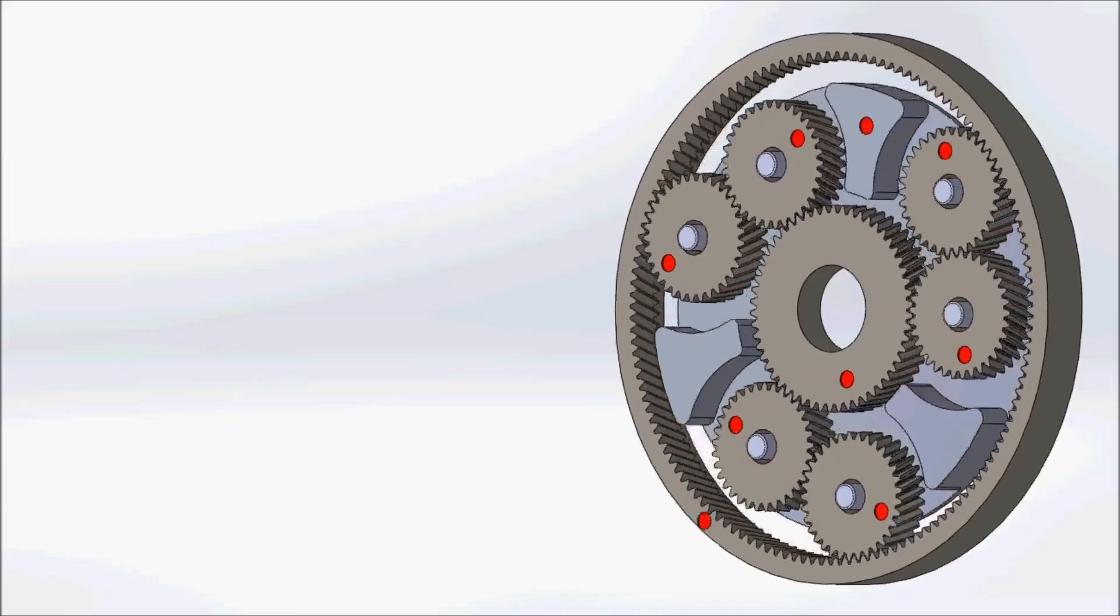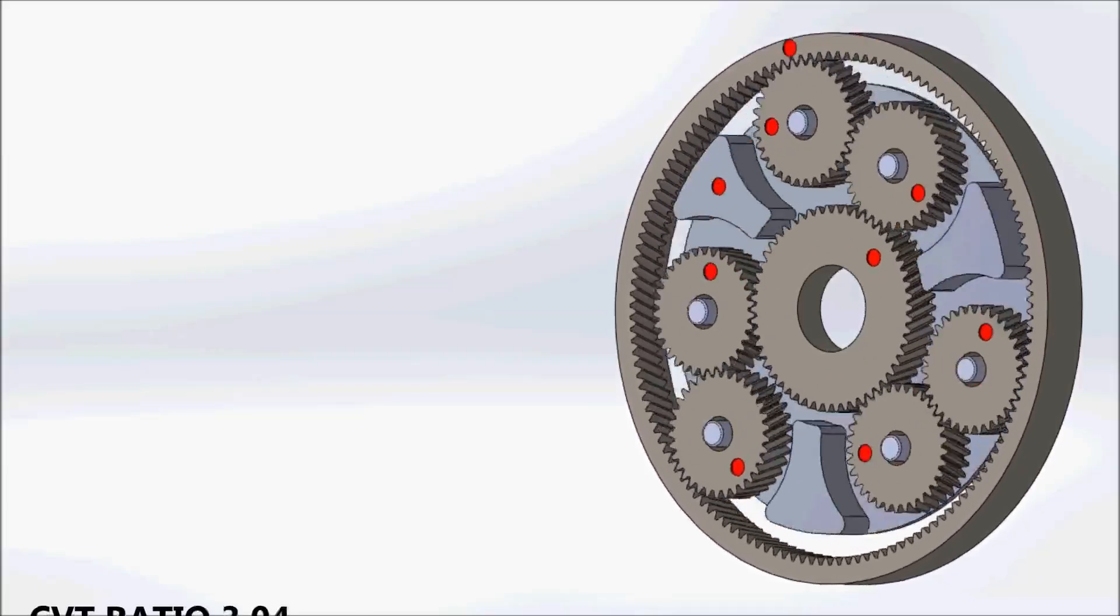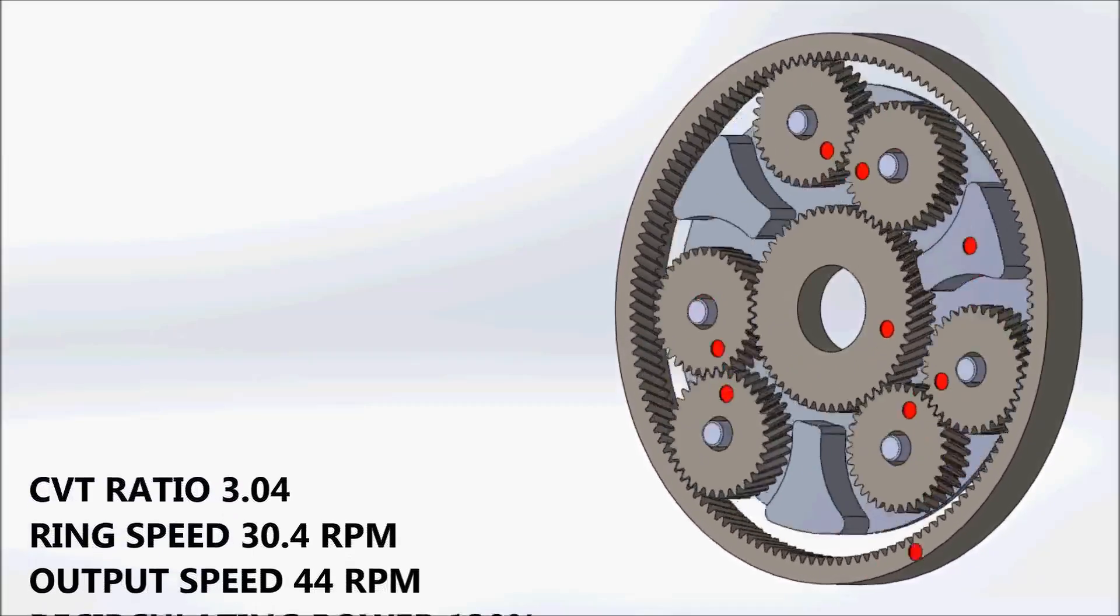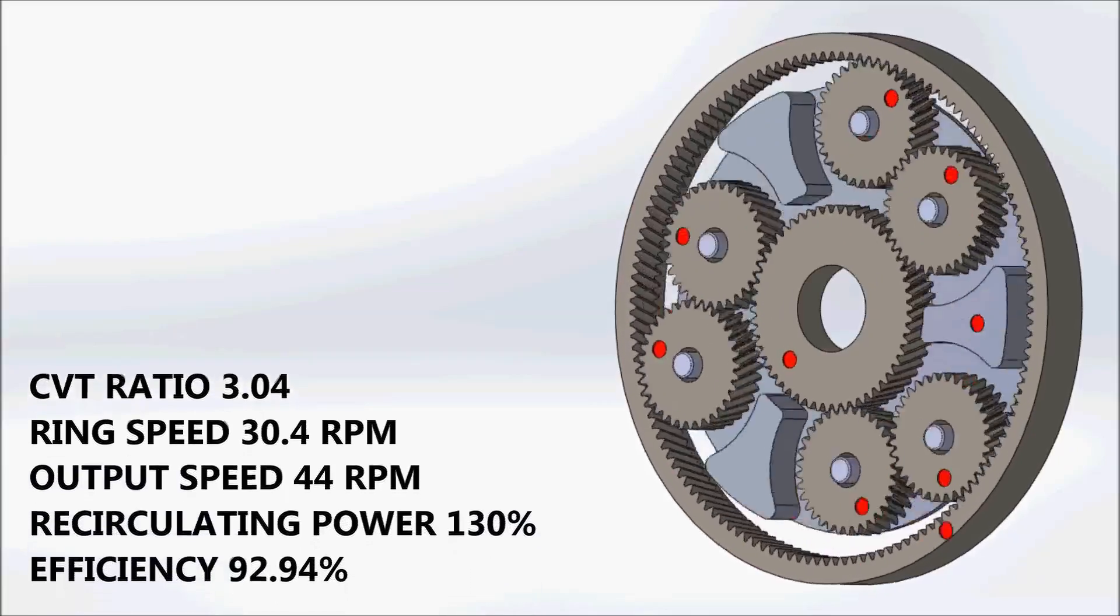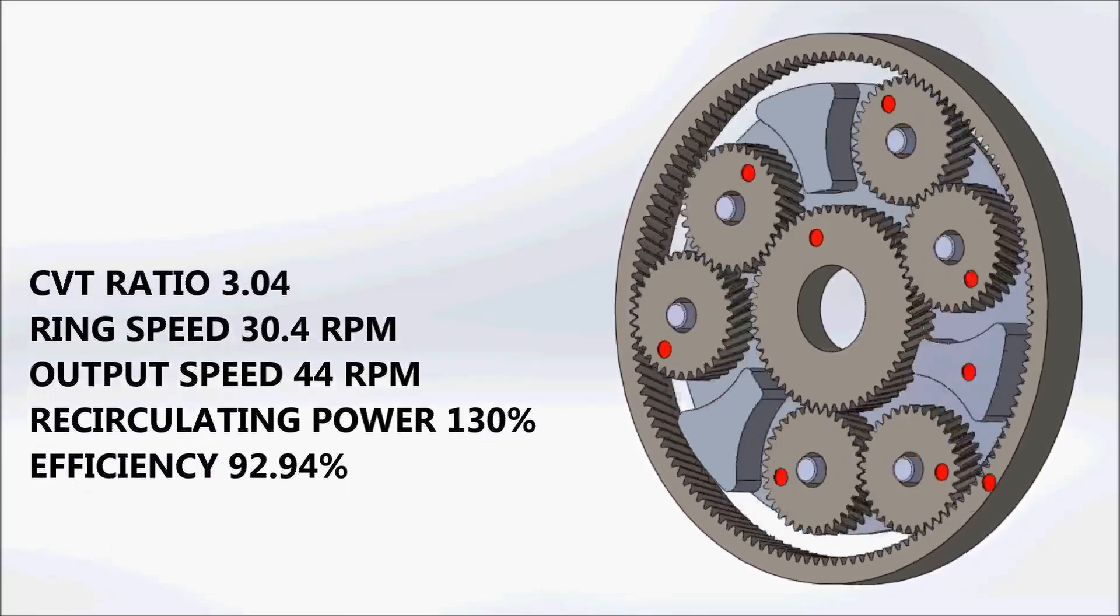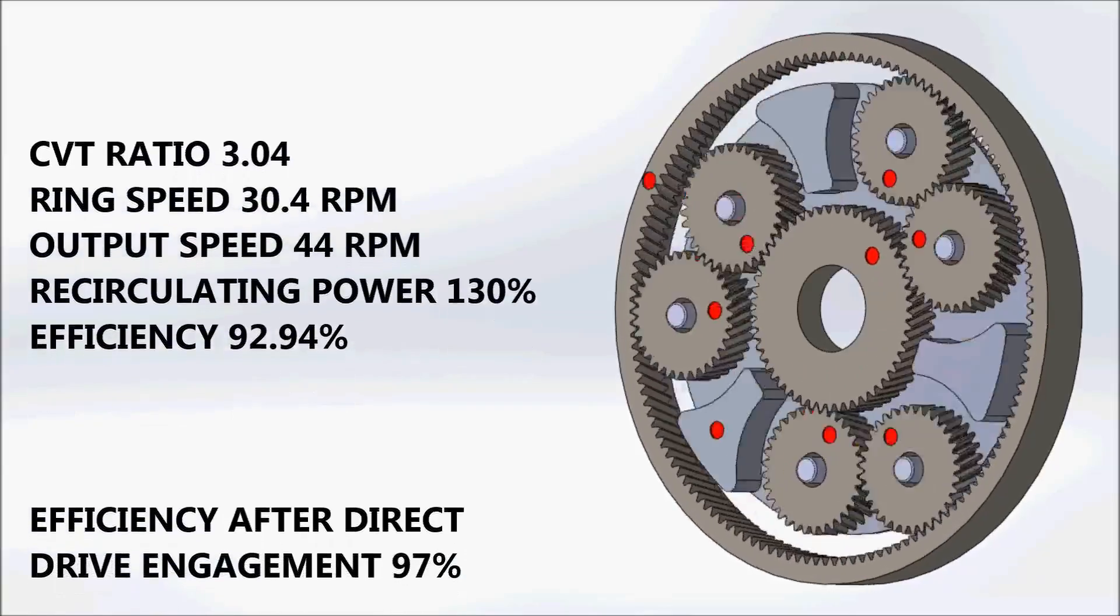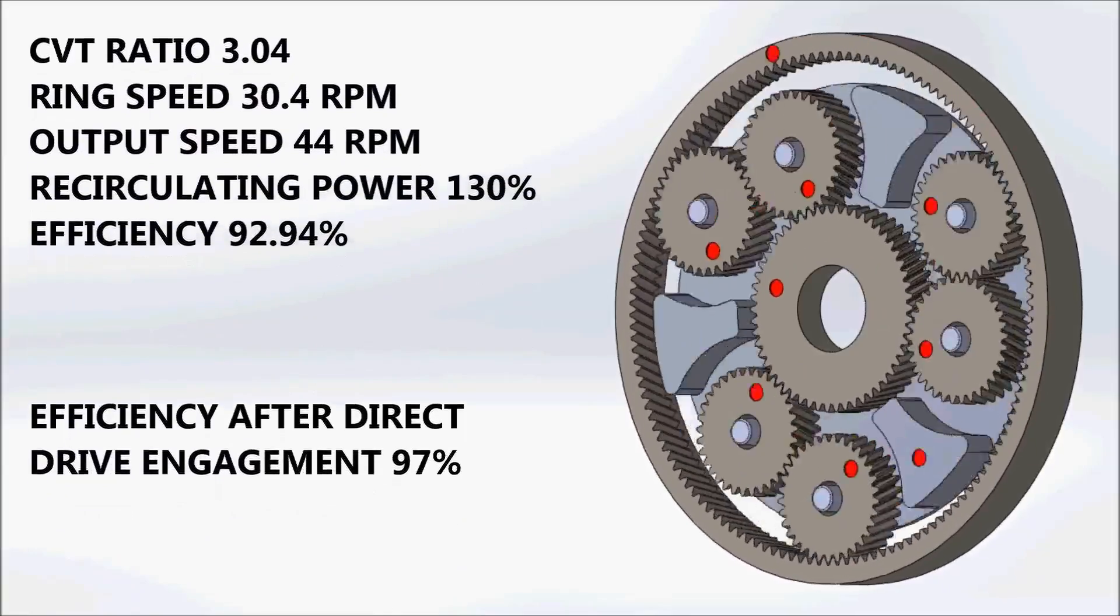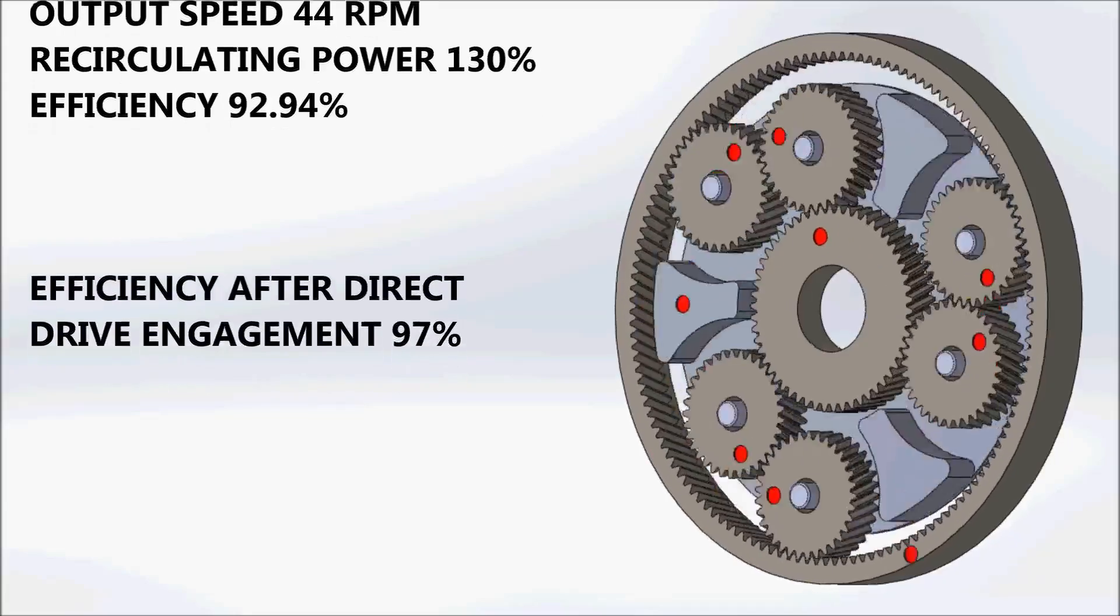When the CVT ratio is moved to extreme high gear of 3.04, the input speed is multiplied by well over four times. The vehicle is now moving very fast, with the recirculating power reduced to 130%. The overall system efficiency drops to below 93%, because although the recirculating power has reduced, the CVT efficiency also reduces.